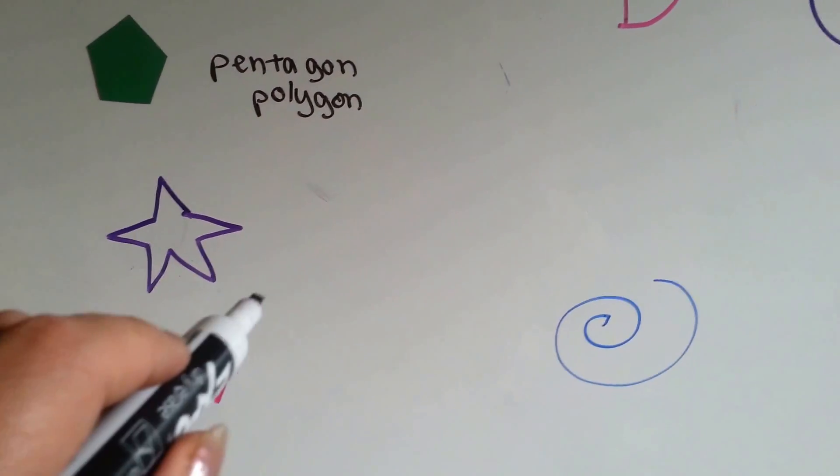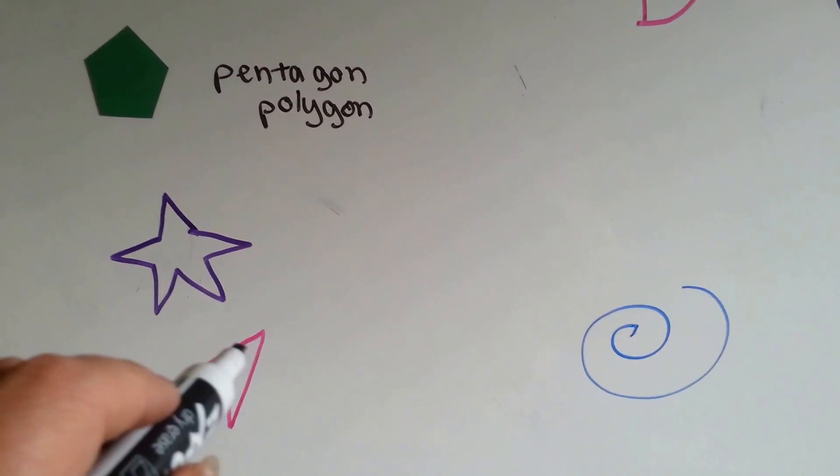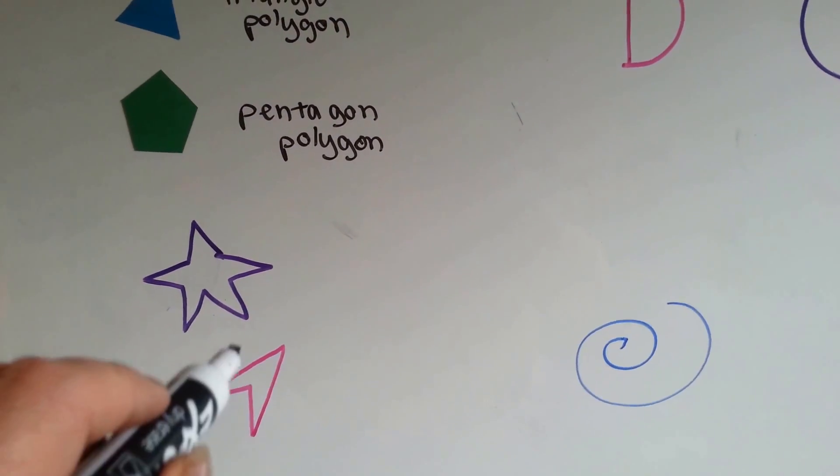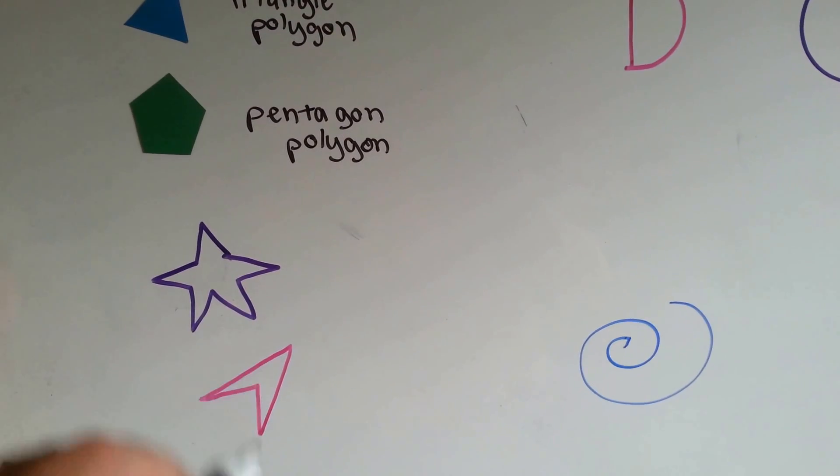How about this arrowhead? It's got straight sides. It's closed. You can't get into the inside like it'll hold water. It can't leak, and its sides are made of line segments.